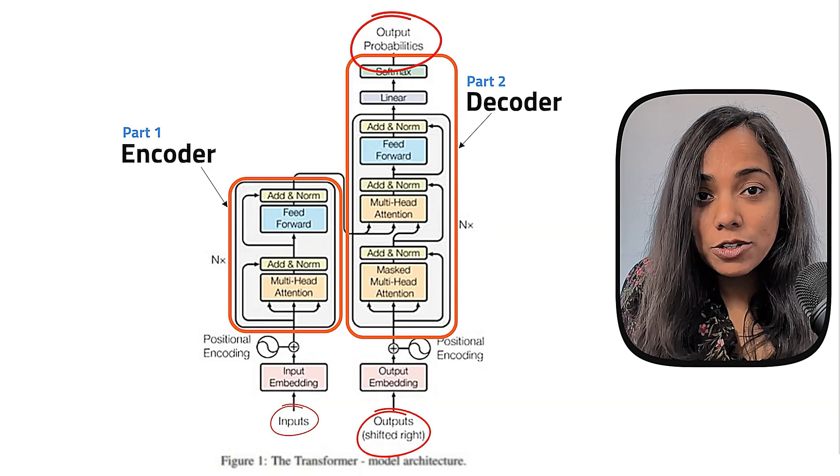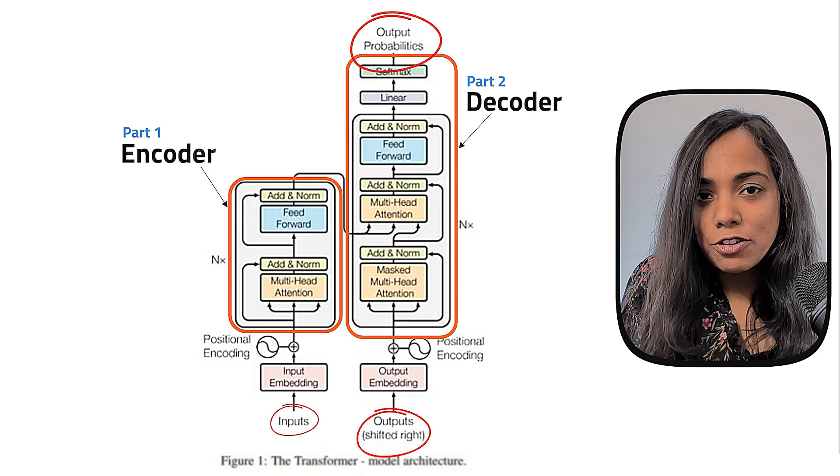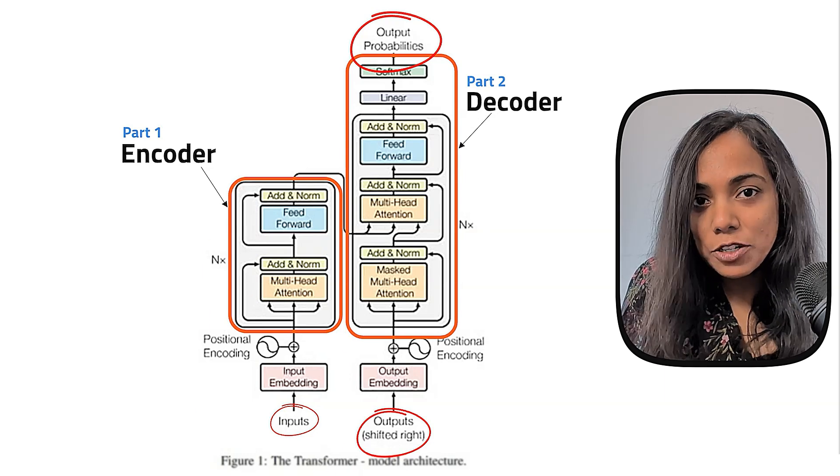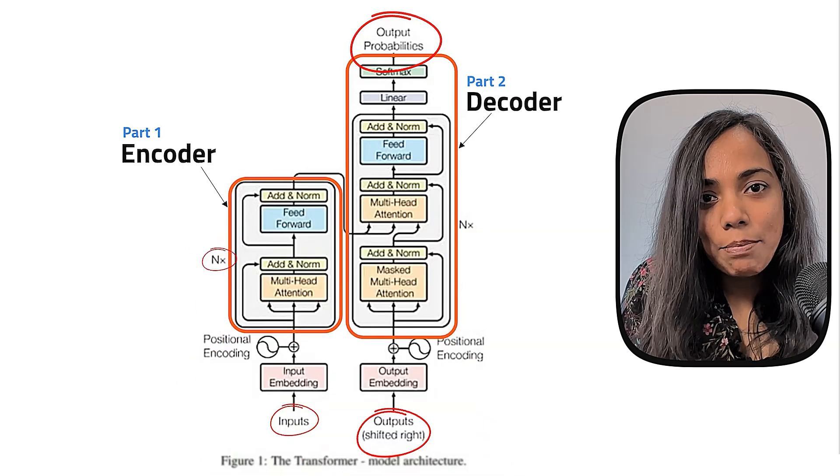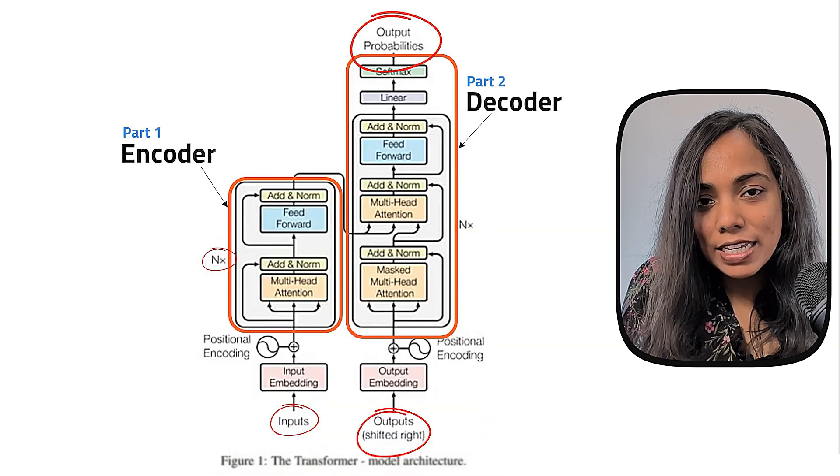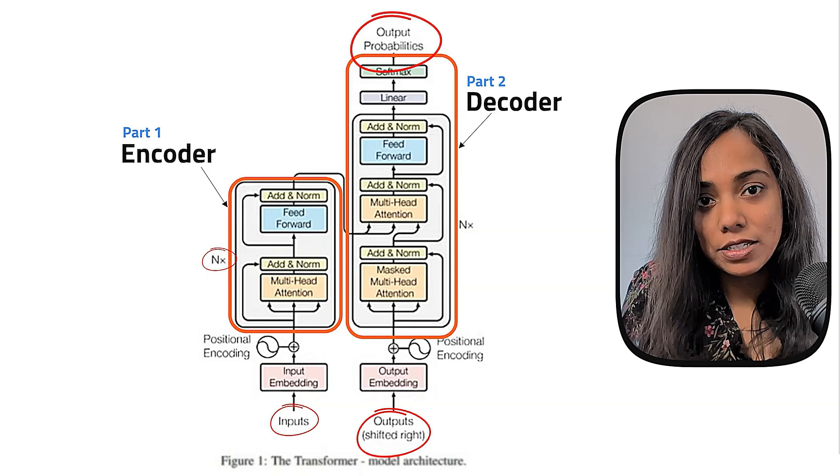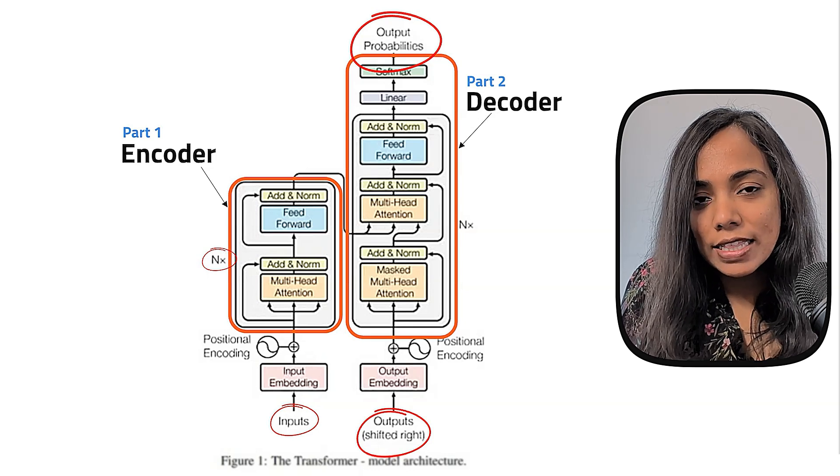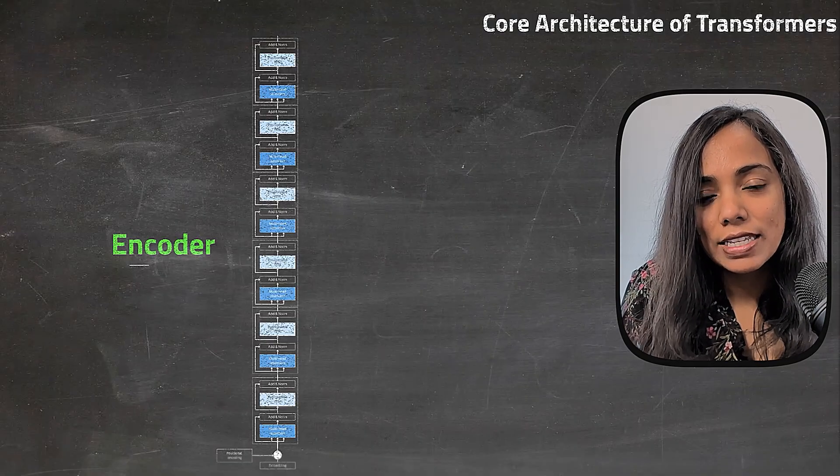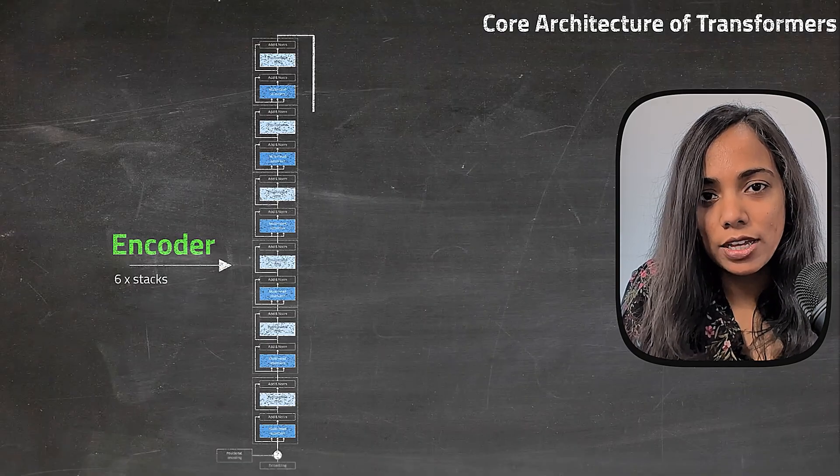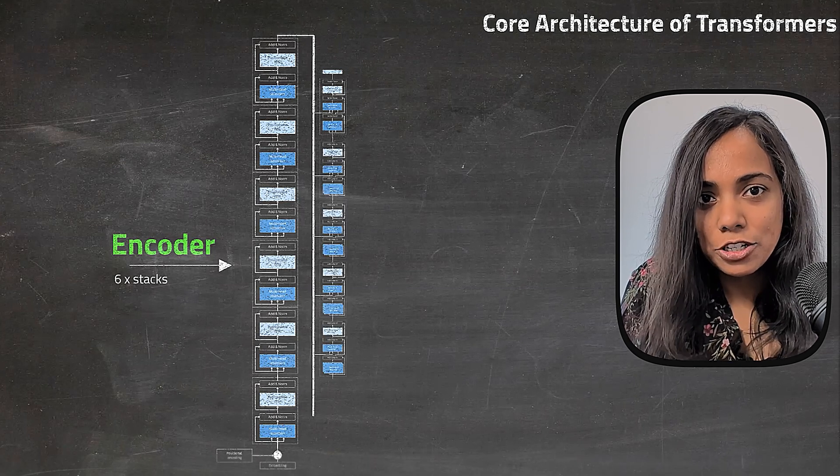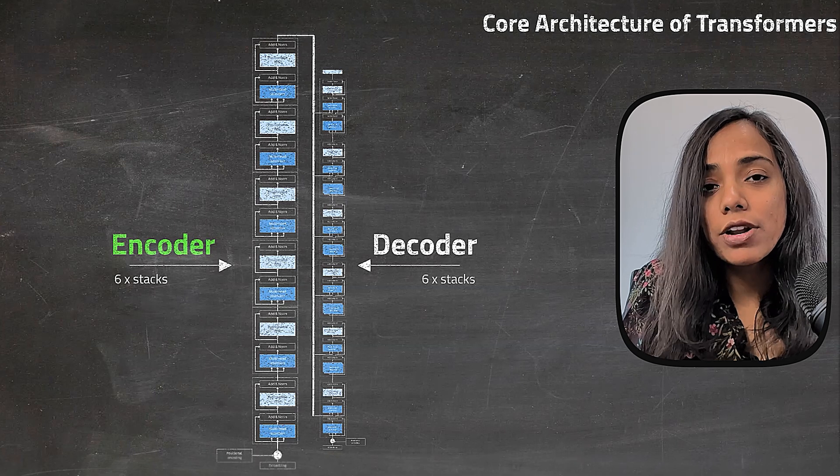Both the encoder and the decoder are made of stacks of identical layers. The N that you see here is about how many times each of the stack is repeated. And in this paper for the base model, this N's value is six, which means there are six stacks of the encoder and the decoder.